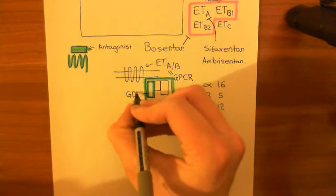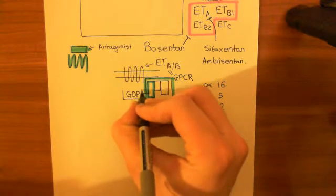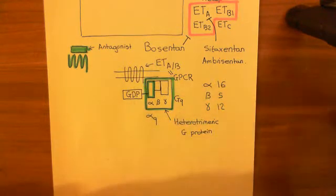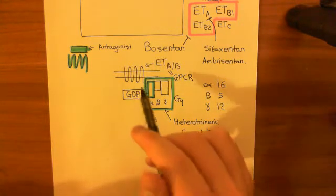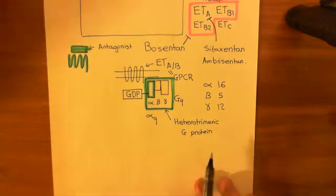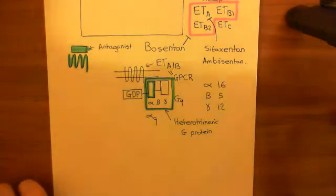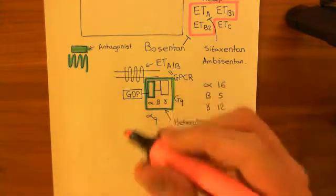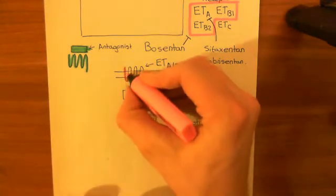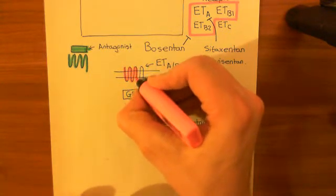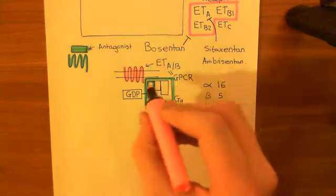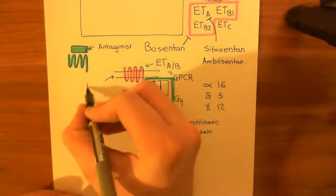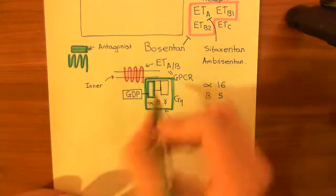At the moment, our heterotrimeric G protein is bound to GDP — specifically the alpha subunit is bound to GDP — and it's in the off state. Also, our endophyllin receptor has not yet bound to the endophyllin, so it is also in the off state. Some G protein coupled receptors, when they are in the off state, will actually be bound to the associated heterotrimeric G protein. Others will not; instead the heterotrimeric G protein will be bound to the inner leaflet of the phospholipid bilayer, whizzing around on it.